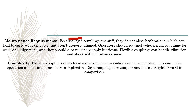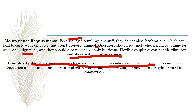Regarding maintenance requirements: because rigid couplings are stiff, they do not absorb vibrations, which can lead to early wear on parts that are not properly aligned. So operators should routinely check rigid couplings for wear and alignment, and also routinely apply lubricants. Flexible couplings can handle vibration and shock without adverse wear. However, flexible couplings often have more components and are more complex — looking at slip, muff, clamp, compression, or flange couplings, rigid couplings are simpler and more straightforward in comparison.